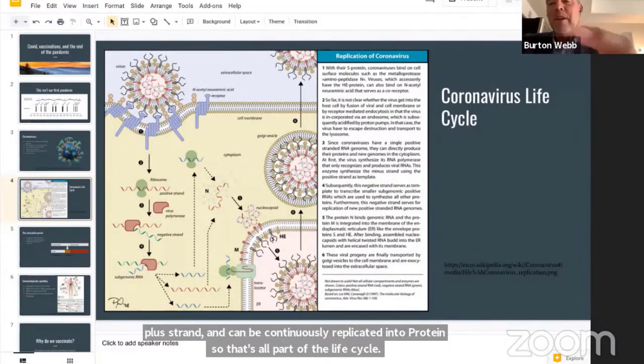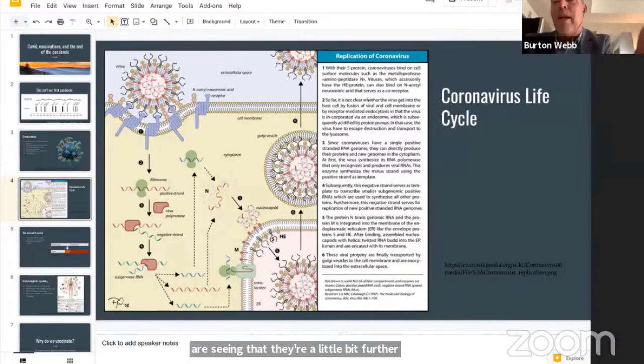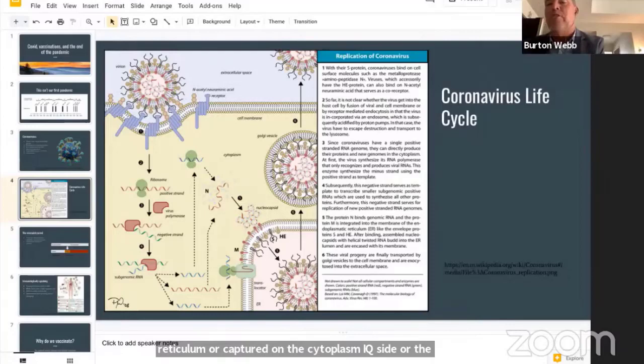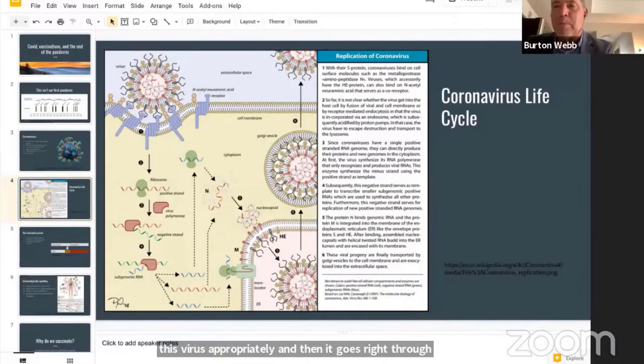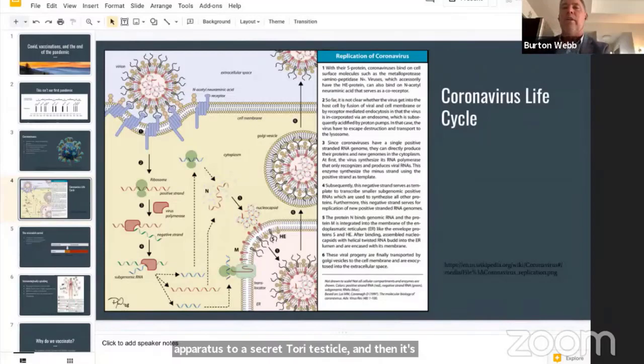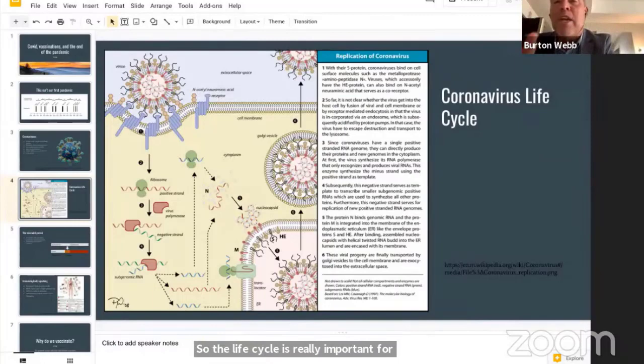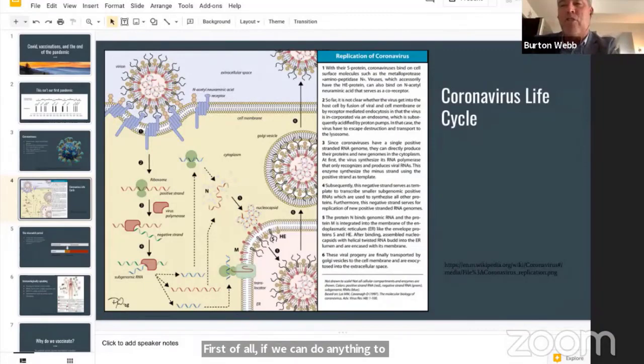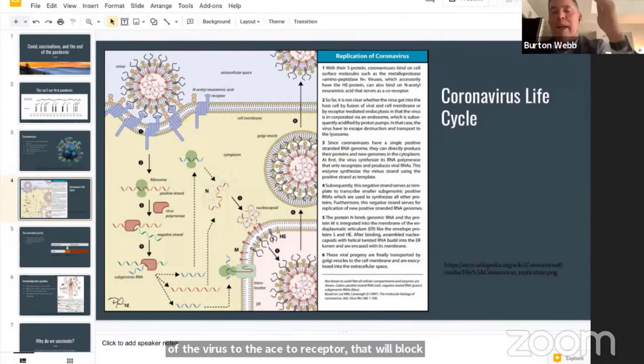Some of this RNA will carry leader sequences, which will allow it to be carried to the endoplasmic reticulum. Those viruses will be either inserted into the membrane or captured so that we can package this virus appropriately. Then it goes through the default pathway from the endoplasmic reticulum to the Golgi apparatus to the secretory vesicle, and then it's secreted out into circulation as an intact whole virus. The life cycle is really important for a variety of reasons. If we can do anything to block the binding of the virus to the ACE2 receptor, that will block the ability of the virus to gain access to the cell.